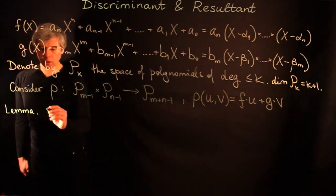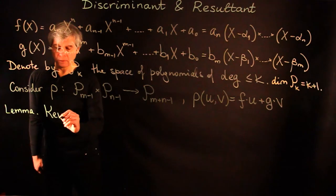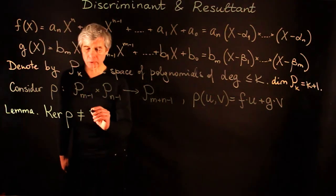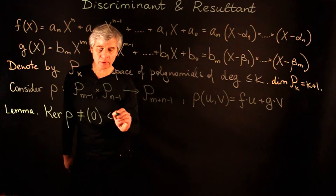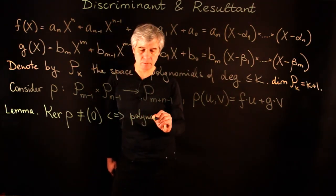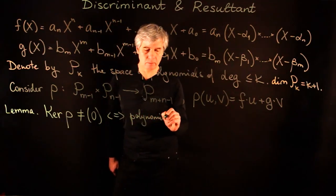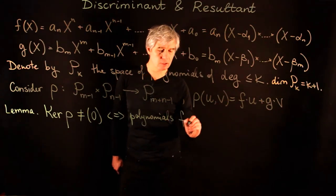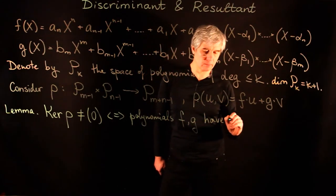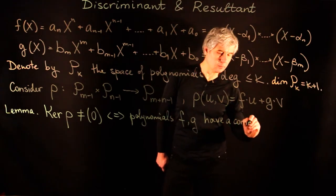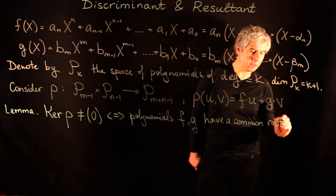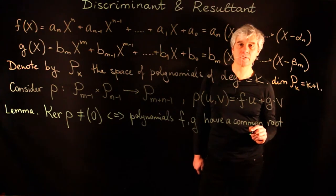We have the following simple lemma: the kernel of ρ is non-trivial if and only if the polynomials f and g have a common root, or equivalently their greatest common divisor is different from one.